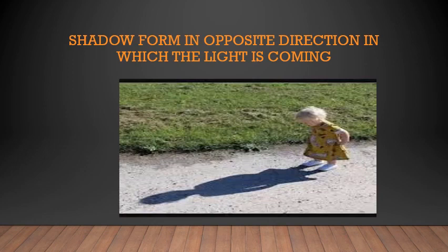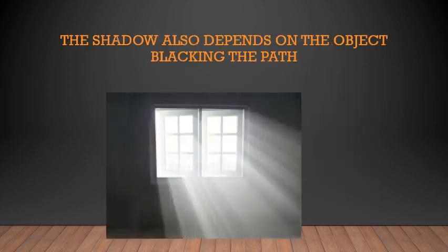That is how shadow works — it forms in the opposite direction from which the light is coming. When an object blocks the light from passing through it, it creates an area of darkness. That area of darkness is called a shadow.